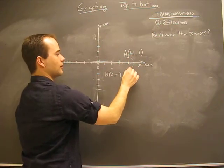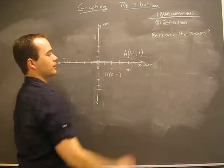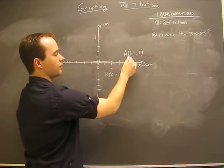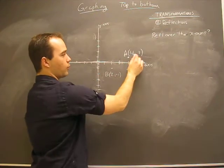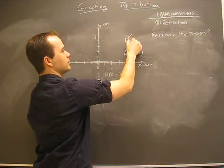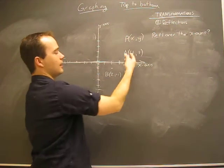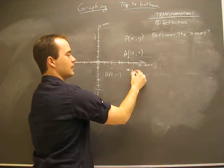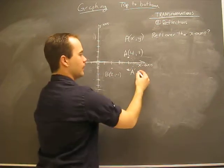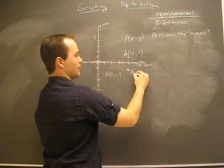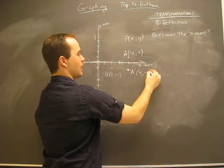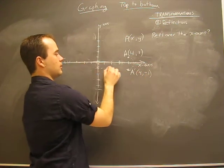We reflect over the x-axis, and that's where we end up. So point A began as (4, 1). A prime, which is the new version, is now at (4, -1). It's four and negative one, we're one below.